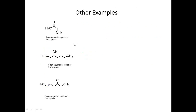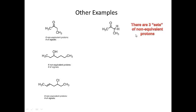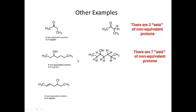Let's look at a few more examples from the worksheet. Here we have methyl ethyl ketone. The question is: how many sets of non-equivalent protons are present and how many signals would you get? If we draw out the hydrogens, we have a CH3, a CH3, and a CH2 — three sets. Each set is non-equivalent to the others, so we should see three signals in the NMR.